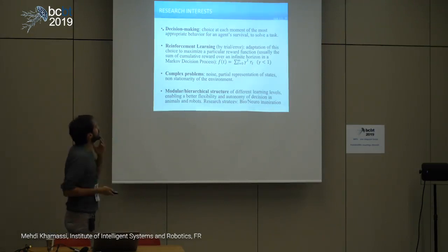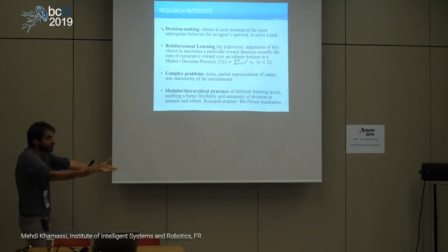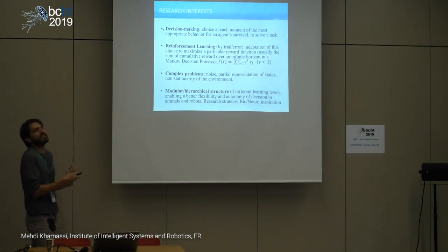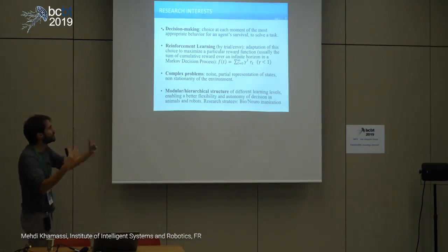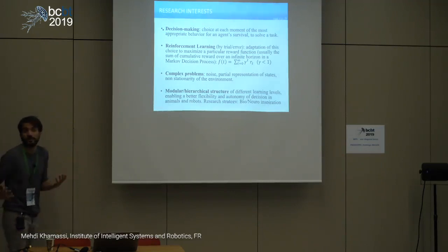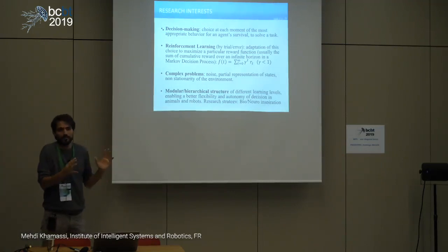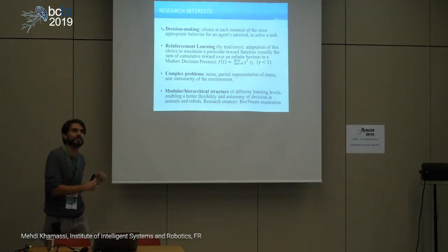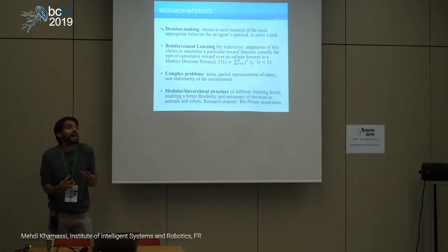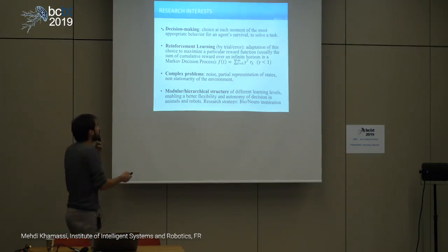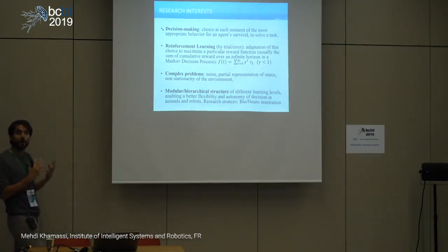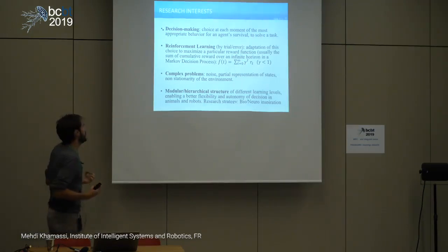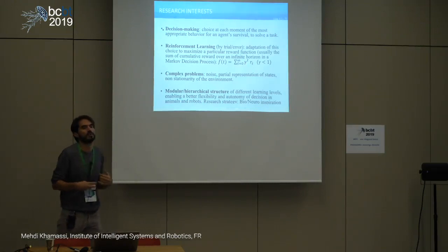In real-world experiments, we face complex problems: noise, partial representation of states, uncertainty, and non-stationarity of the environment, which makes simple reinforcement learning not that efficient. We face the issue of how to modularly and hierarchically organize different learning processes to enable behavioral flexibility and autonomy of decision-making.